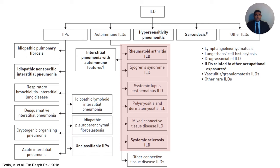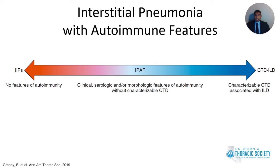There are six types of connective tissue diseases commonly involved with interstitial lung diseases that fall in the category of autoimmune ILDs: rheumatoid arthritis, Sjogren's syndrome, SLE, myositis, mixed connective tissue diseases, and systemic sclerosis. Interstitial pneumonia with autoimmune features, or IPAF, is a research category first coined in 2015 by the American Thoracic Society and European Respiratory Society, defining patients with idiopathic ILD with characteristics of underlying autoimmunity but falling short of definitive connective tissue disease.